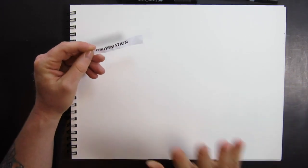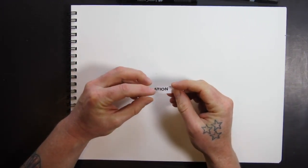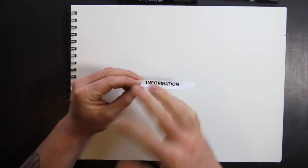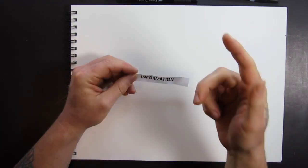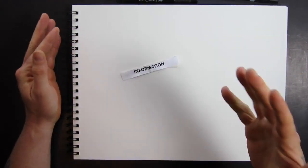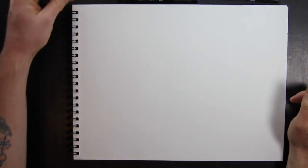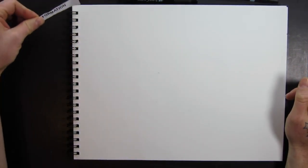All right guys, let's see here. Information, information, information. Another one of those kind of vague words. I can kind of think of a couple things when I think information. Books, papers, computers, you know, phones.